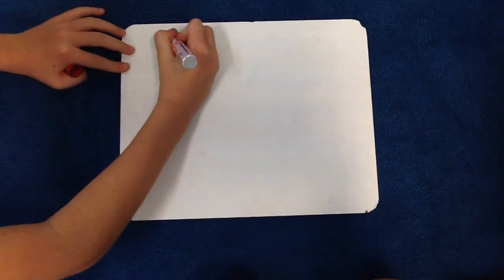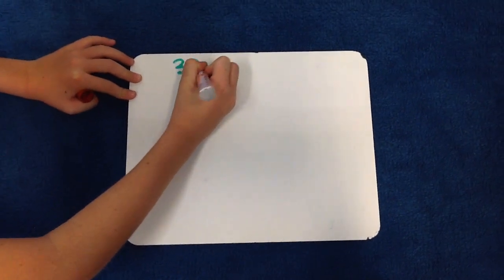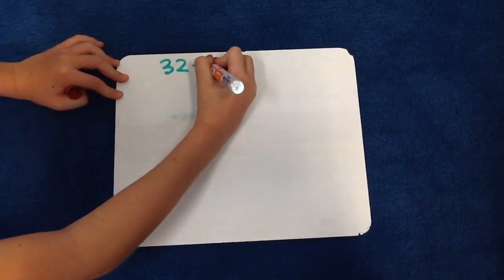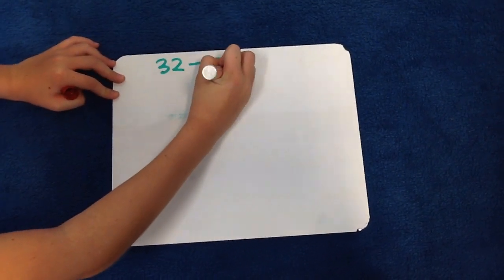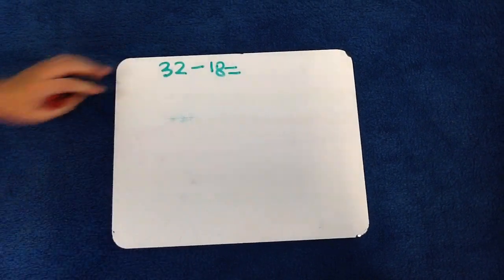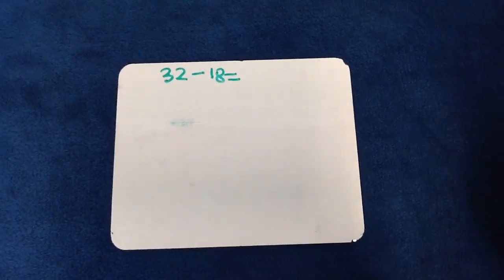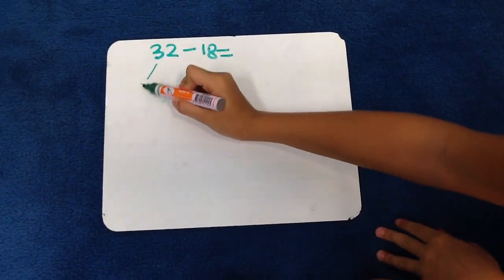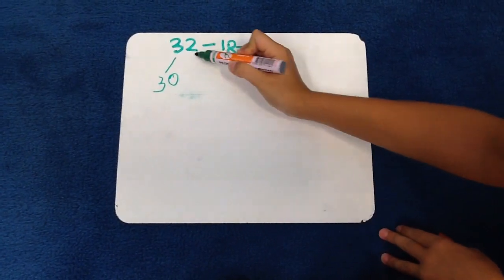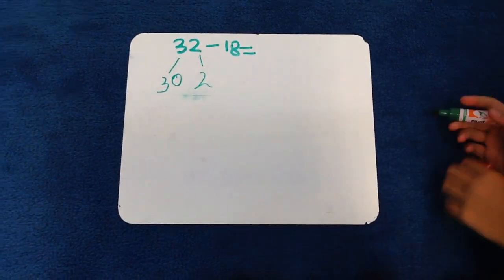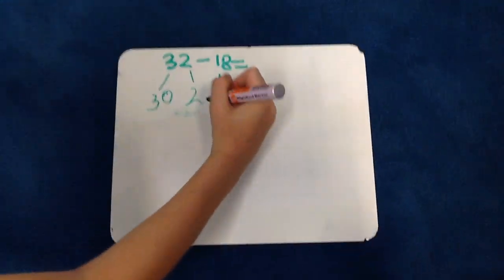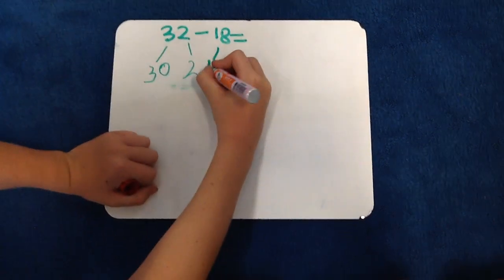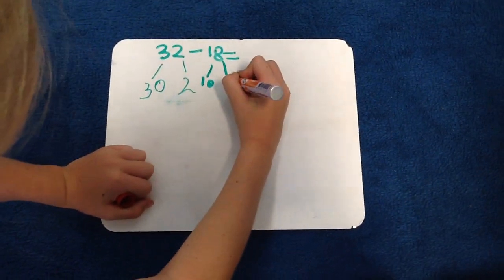Our problem is 32 minus 18. First we split them. 32 splits into 30 and 2, and 18 splits into 10 and 8.